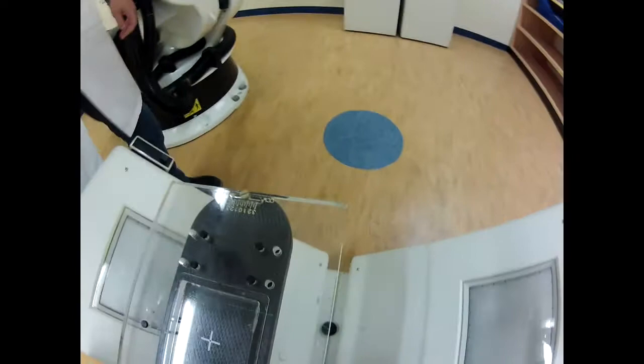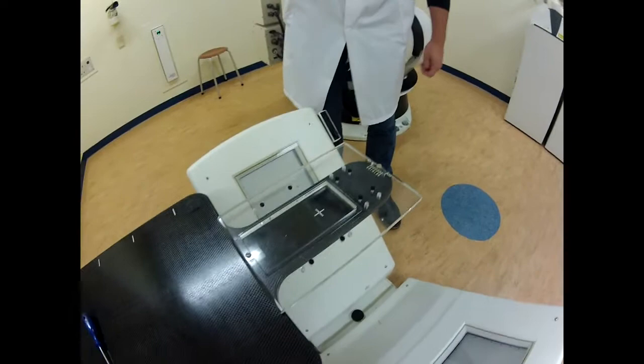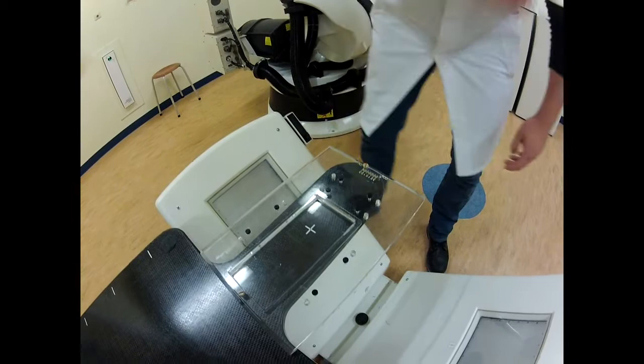When you're making x-ray images during treatment and you notice during the matching that there's clockwise or counterclockwise rotations, you can then untighten the screw and turn the base plate as far as you like and then tighten it again to resolve the clockwise, counterclockwise rotations.